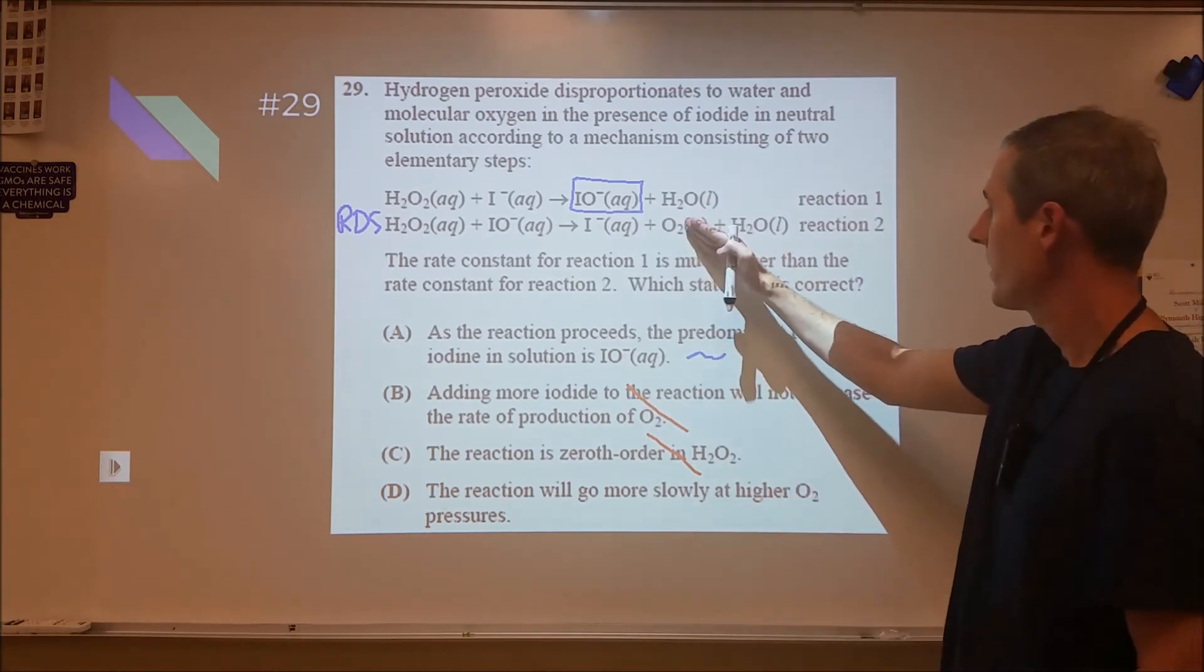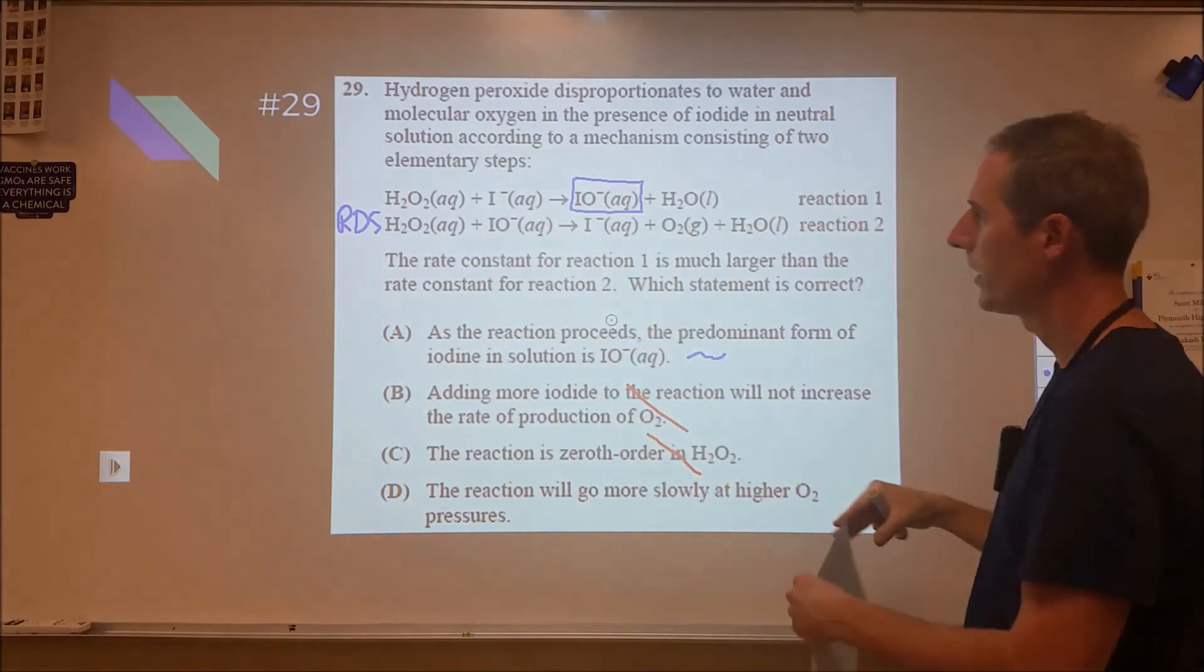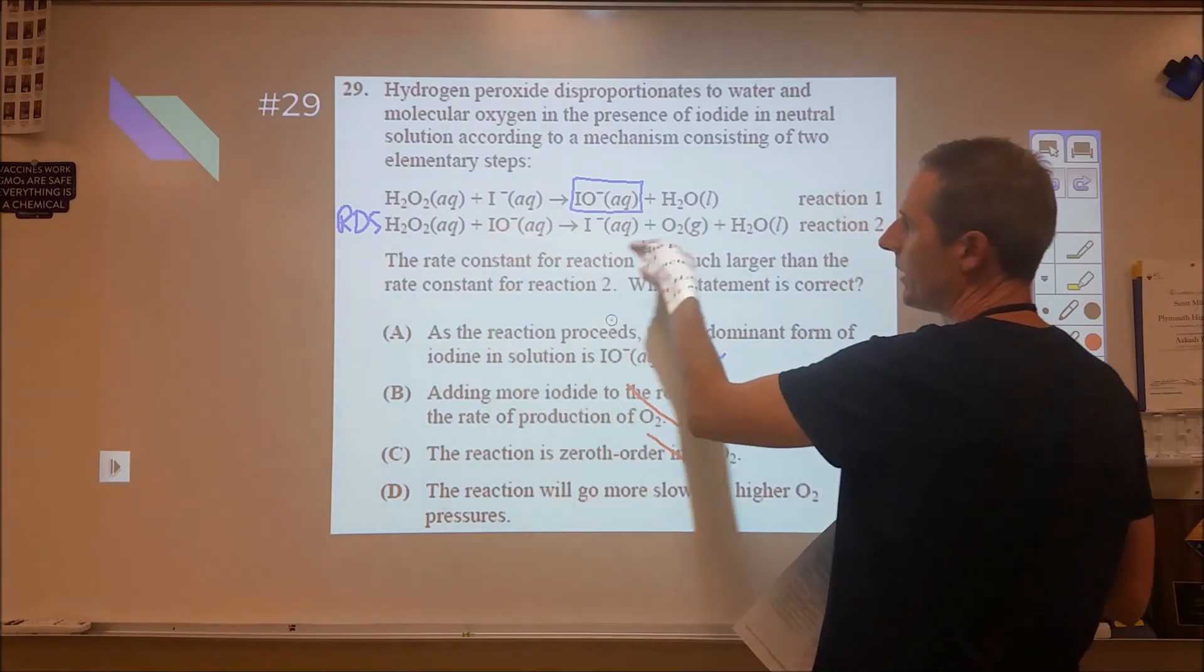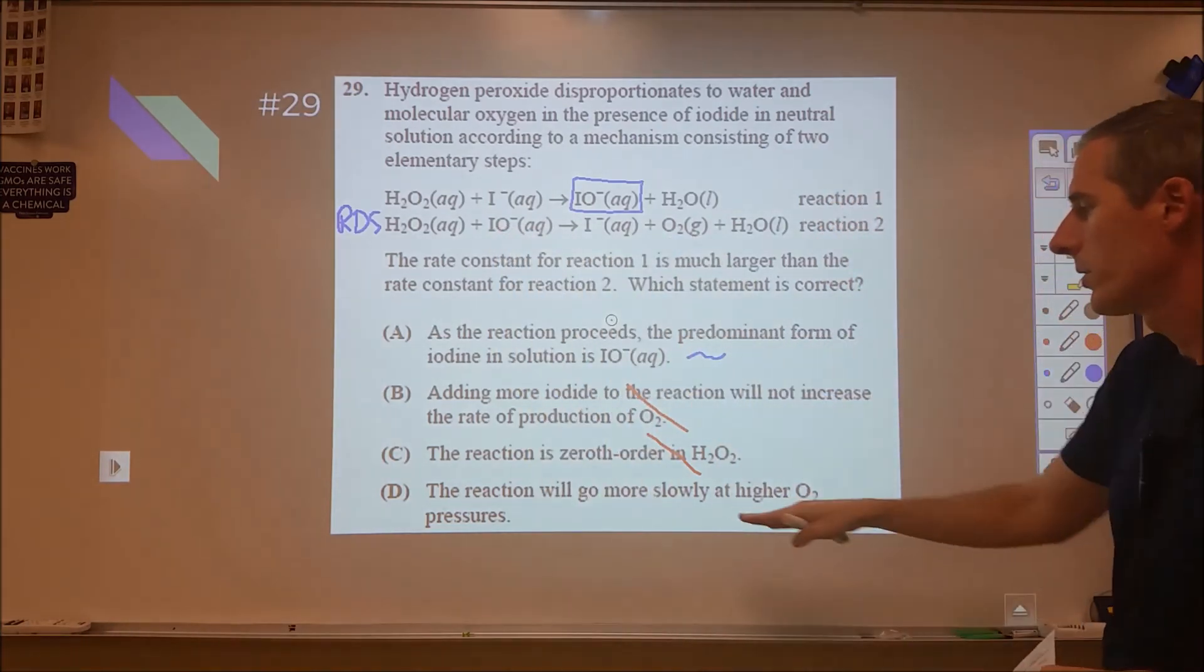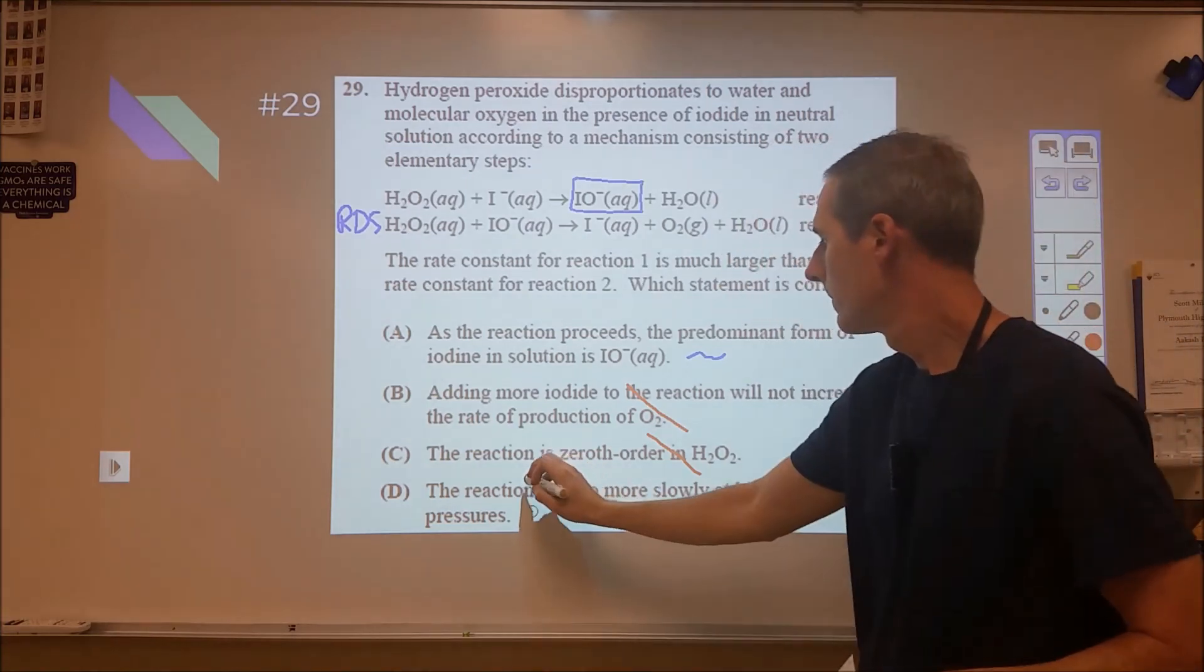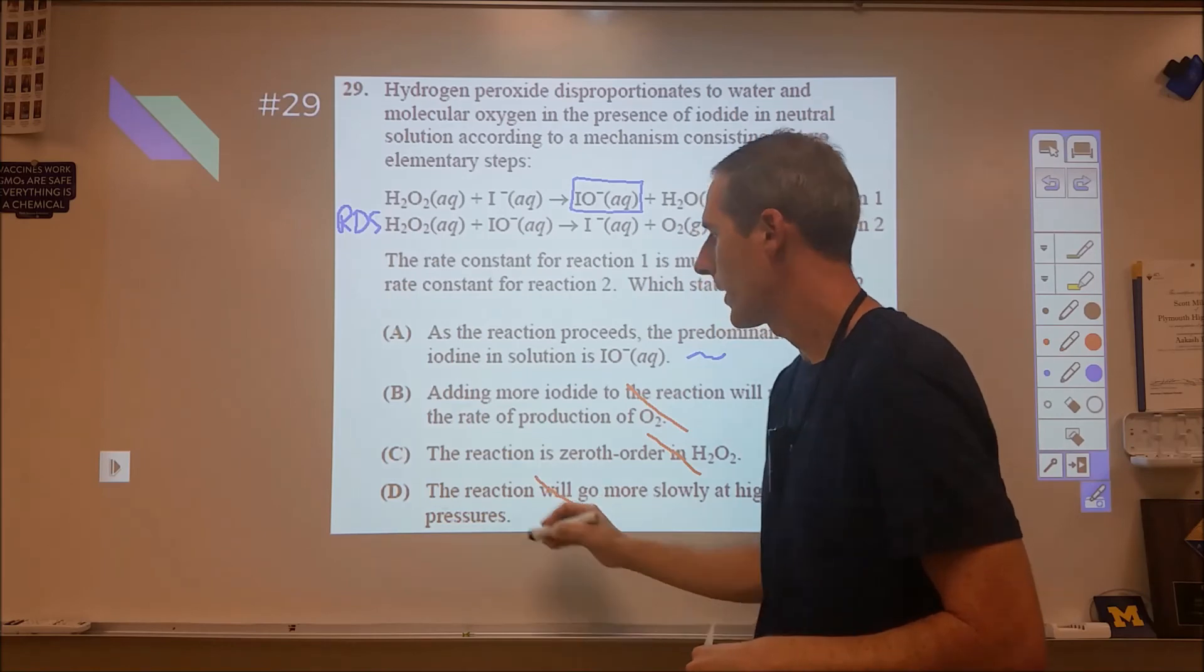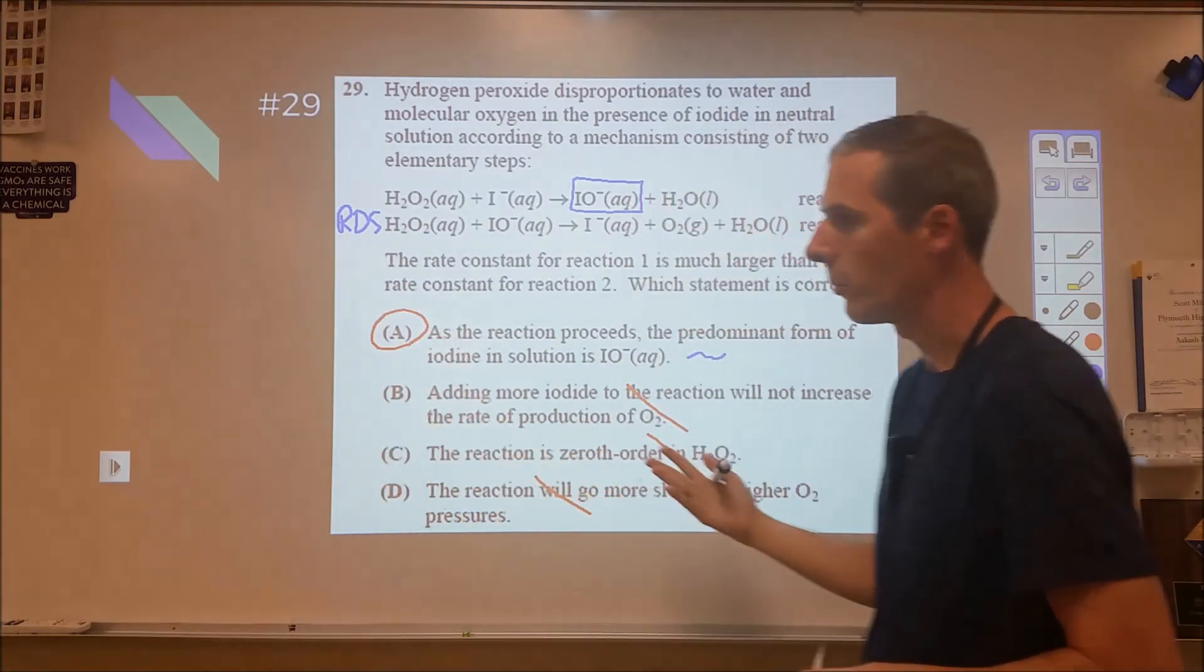Now we've got an in answer and now we're looking at D to see whether or not we should go back to that or go with B. So D says the reaction will go more slowly at higher oxygen pressures. Now oxygen is present as a final product. So in theory, this could go backwards. But really, if we think about that, that's just going to produce more of the hypoiodide and therefore cause the reaction to go faster. So really, there's not a good way for this to cause this to be the case. And at that point then I say, I know B and C are incorrect. D does not look like the correct answer to me. I go back and I click A.